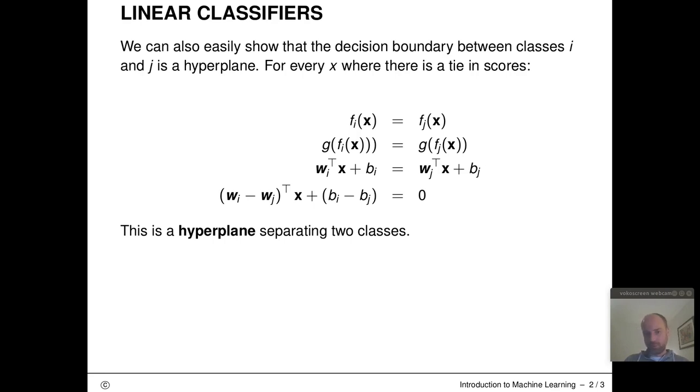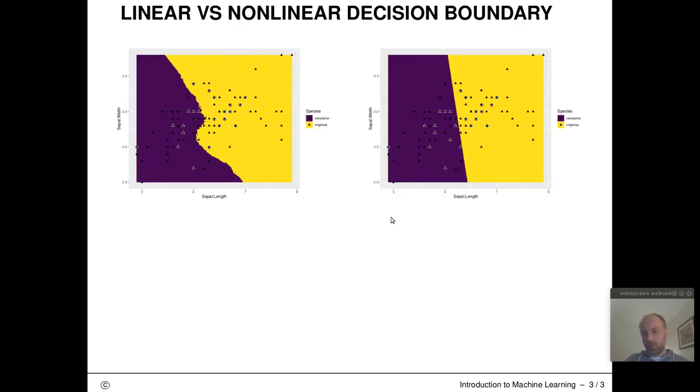All points for which a tie in scores exists for classes i and j will live exactly on this hyperplane.